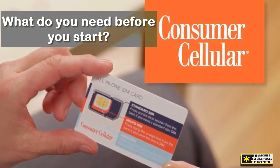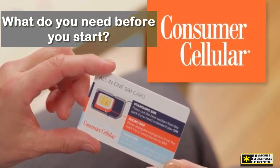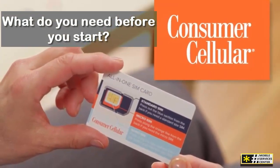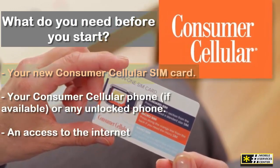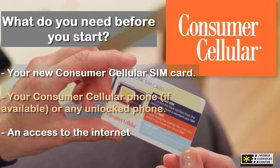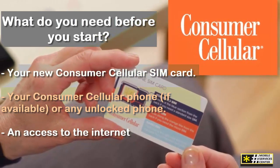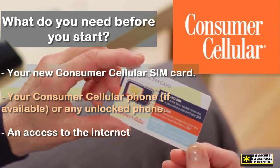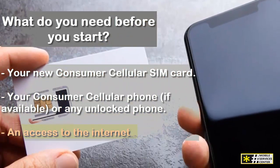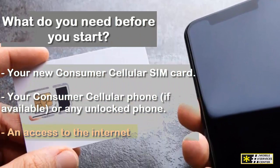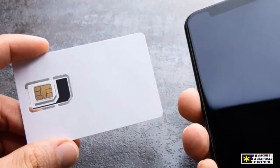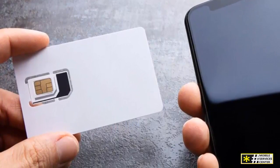What do you need before you start? Firstly, ensure you have the following items at hand: your new Consumer Cellular SIM card, your Consumer Cellular phone (if available) or any unlocked phone, and access to the internet. Remember, the SIM card should be inserted into your phone before starting the activation process.